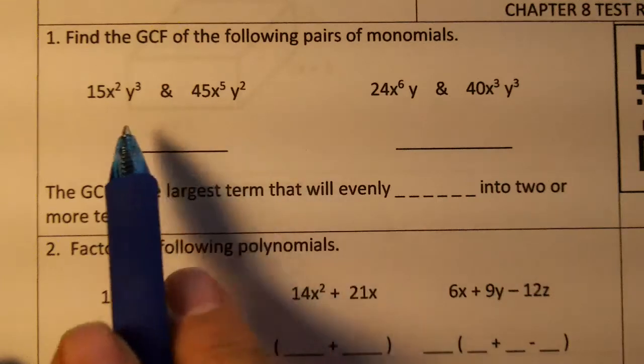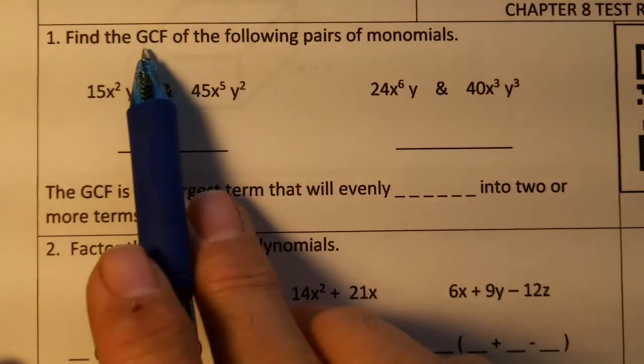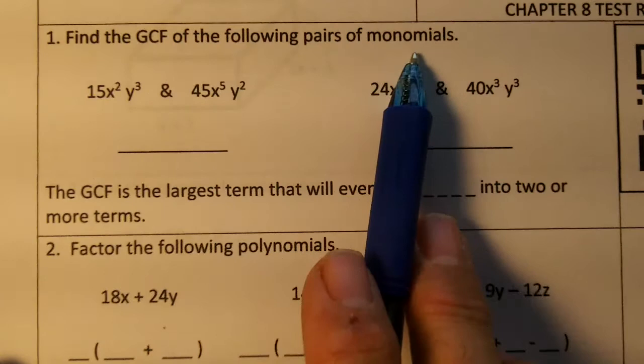Chapter 8 test review, problem number one. Find the GCF, greatest common factor, of the following pairs of monomials.